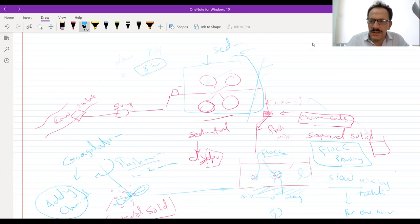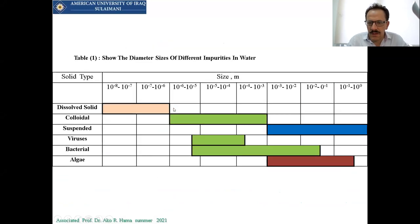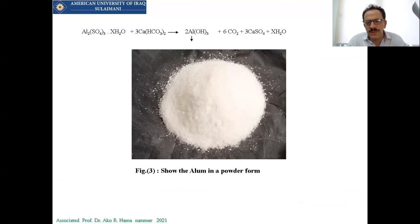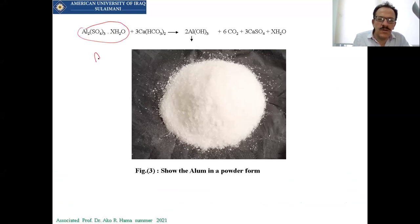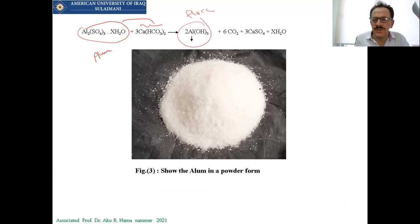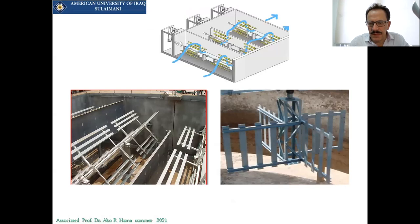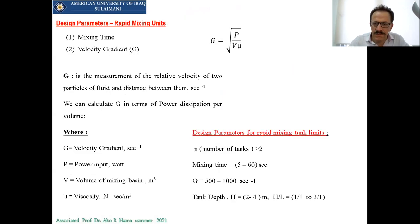I can show you — by the way, this is the alum; it looks like salt. Here's the procedure showing the alum and the natural alkalinity in natural water. Due to this combination, the flock is formed and settles down, taking the suspended particles with it. This device is used for mixing and will be placed in the clarifiers.